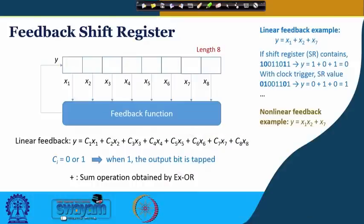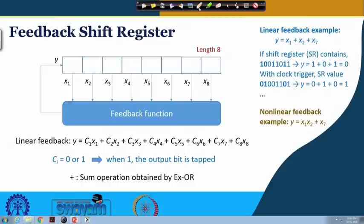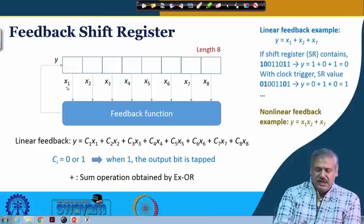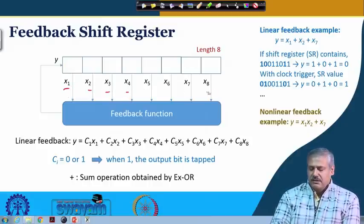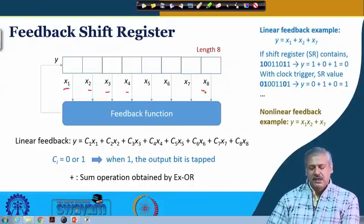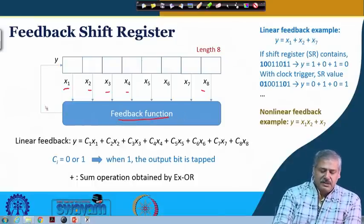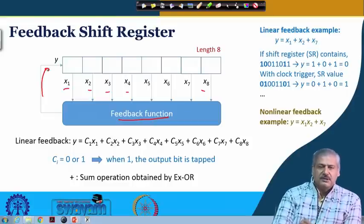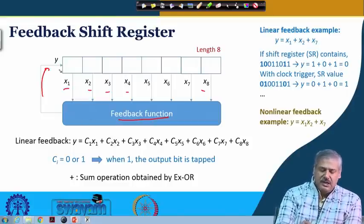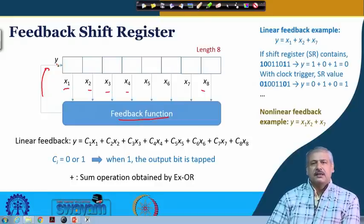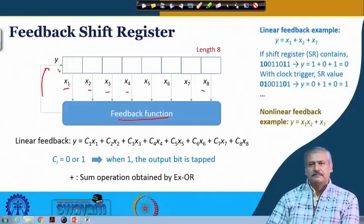By linear feedback shift register, what we actually mean is that the shift register outputs — say it is of length 8 — we consider x1, x2, x3, etcetera up to x8. These go to a block where there is a feedback function, and that feedback function is generating an output, and that output is getting fed as serial in.